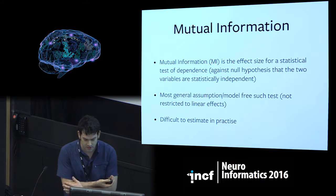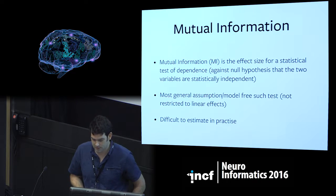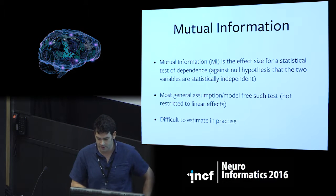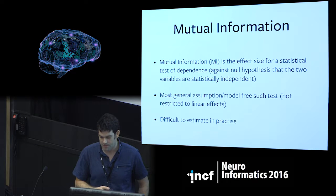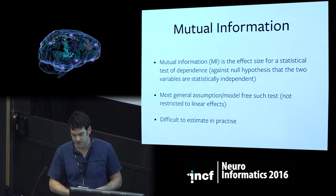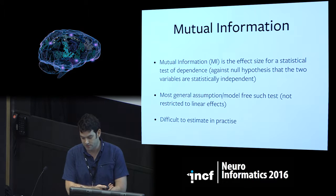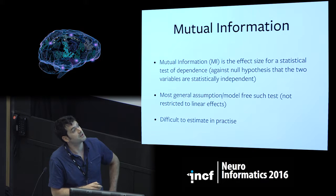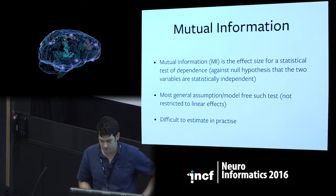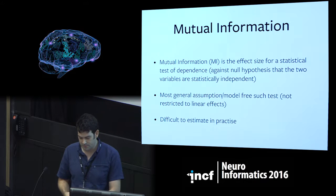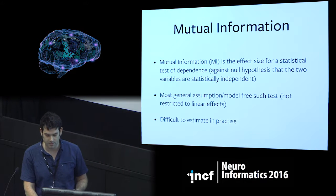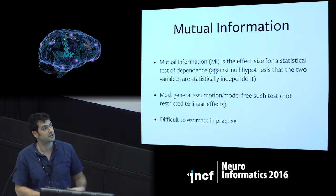So what is mutual information? There are many different interpretations related to coding, transmission, channel capacities, and so on — it's a very elegant theory about communication. But I think the most useful from a neuroimaging perspective is the simplest: to view it as the effect size for a statistical test of dependence. It's the effect size for a test of dependence against the null hypothesis that two variables are independent. In fact, it's equivalent to the log likelihood test of independence, which by the Neyman-Pearson lemma is the most powerful test of dependence. So it's also quite a principled thing to do from a classic statistical point of view.